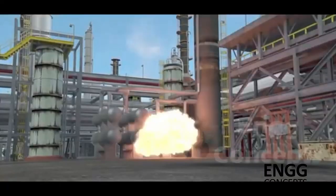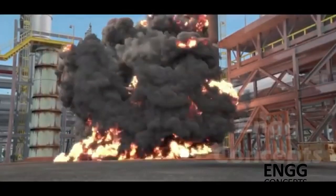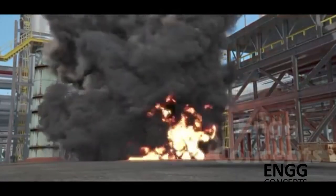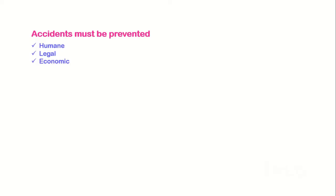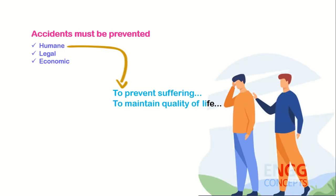Accidents must be prevented and safety should be given priority because of three major reasons: human, legal, and economic. First, human reasons — to prevent suffering and to maintain quality of life. No one should be expected to risk life and limb in return for a contract of employment.